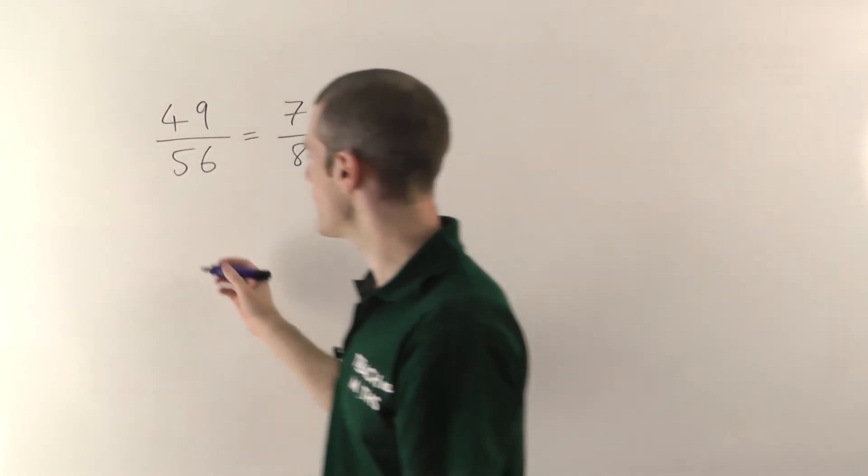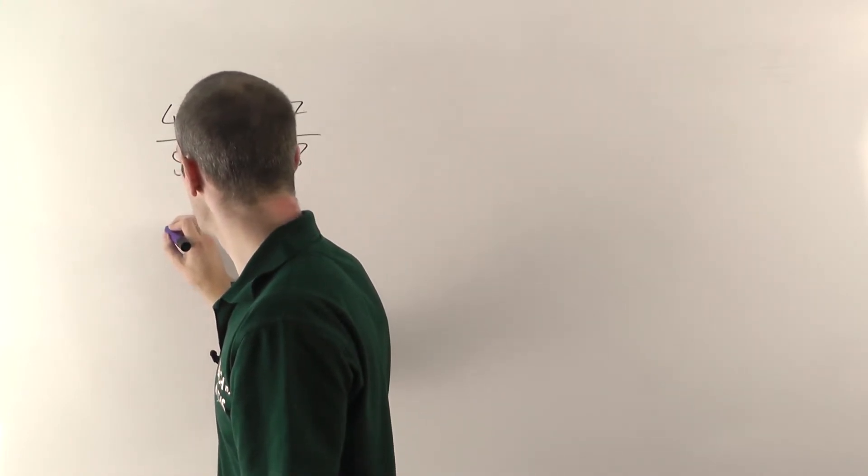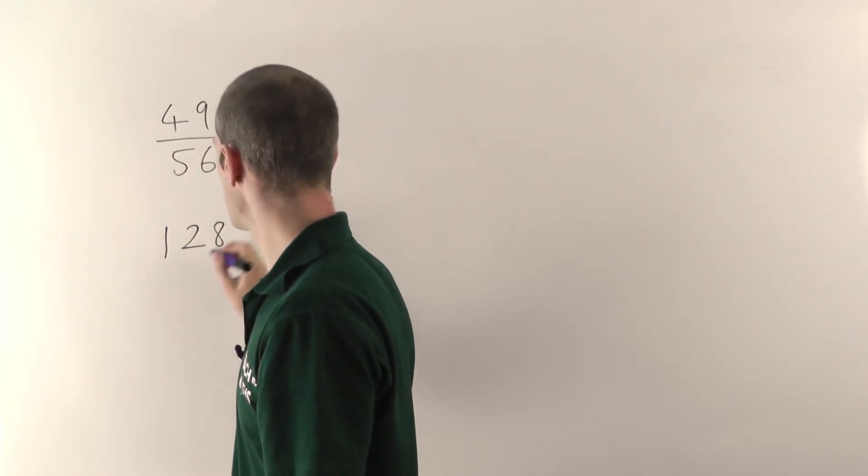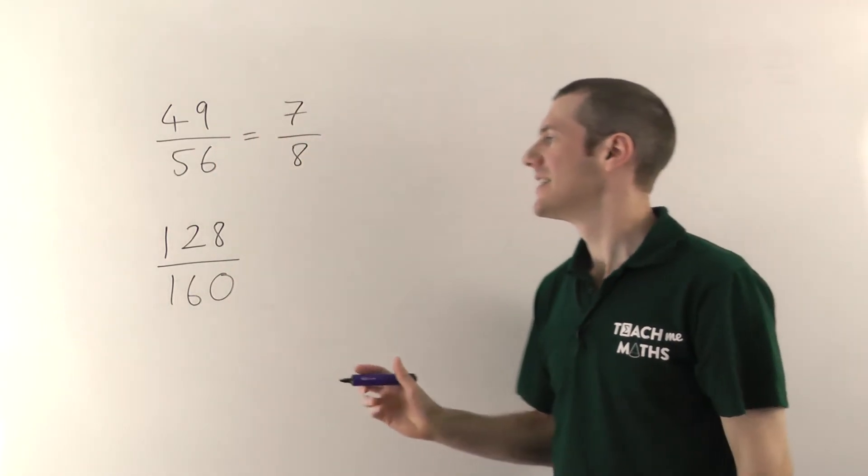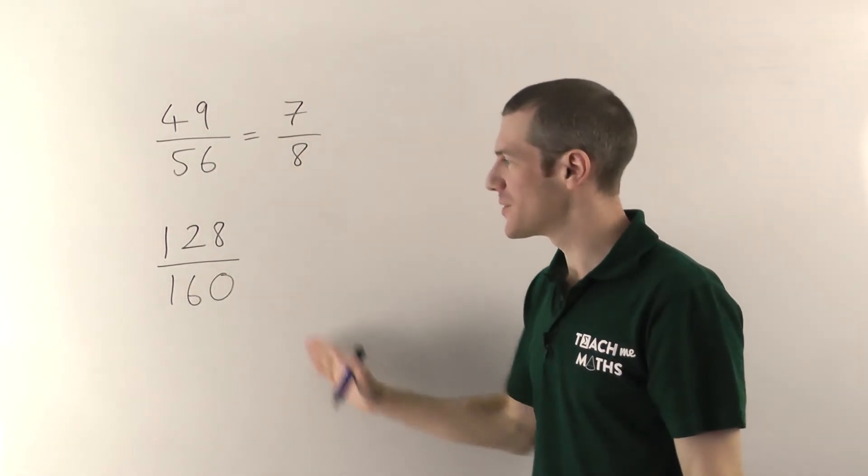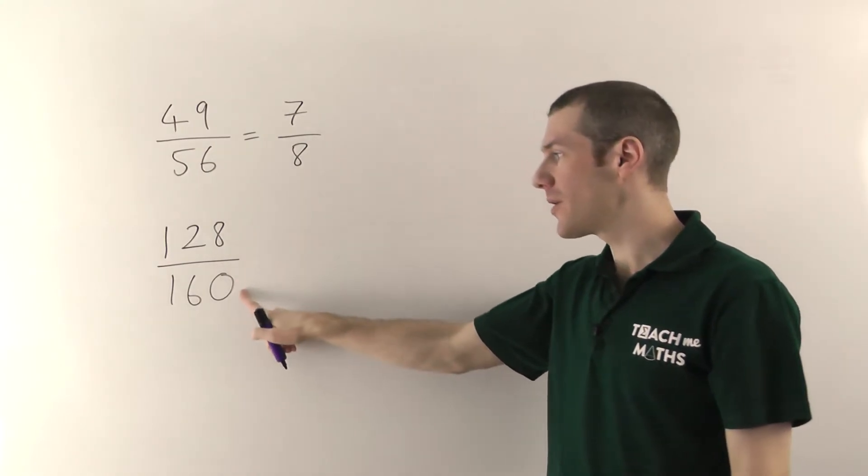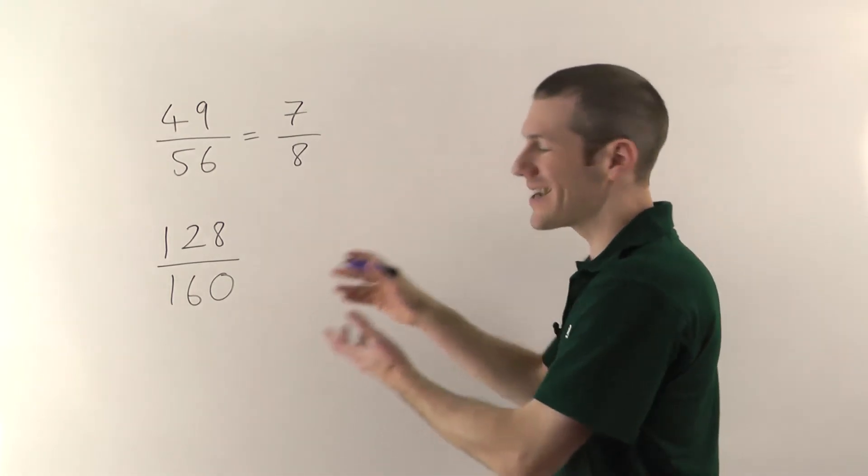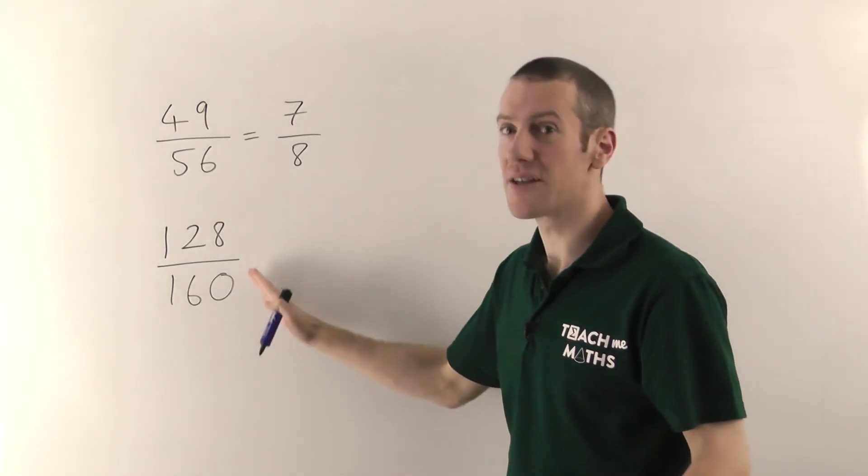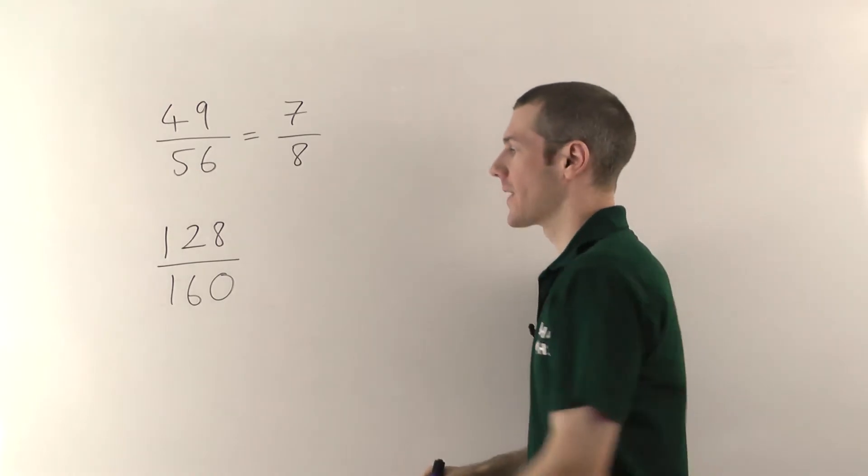Okay, we'll try one more example and then we'll finish. Let's do a nice big one. We'll have 128 over 160. Now, even if you know your times tables, you might struggle a bit when you get to large numbers like this. But if they're both even, you can just keep dividing by 2. It might take a bit longer than if you spotted the biggest number, but you will get there.